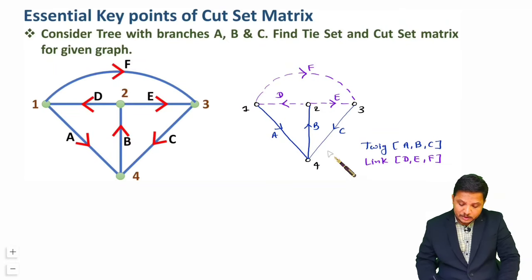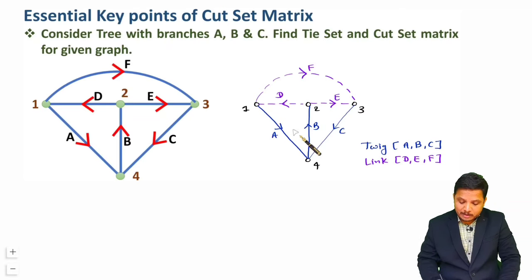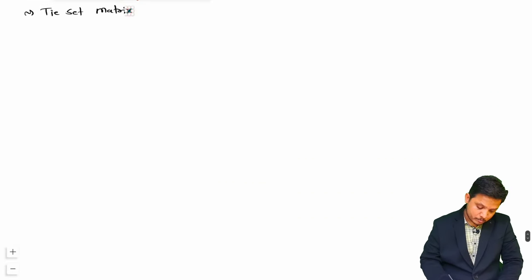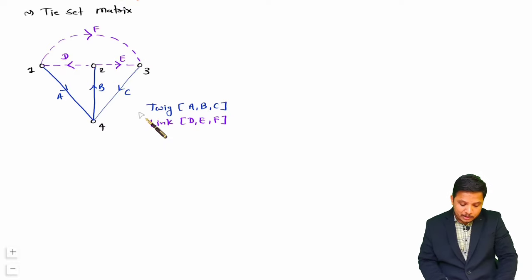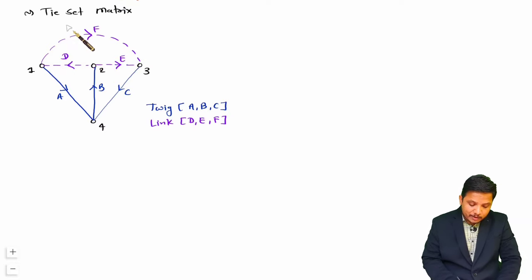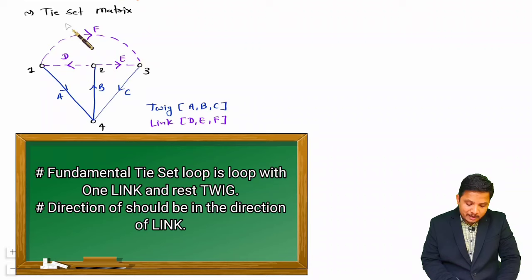The branches which are not connected with this tree are called links, and as per the standard process I should draw them with dashed lines. For this graph, the lines not connected in the tree are links, and here D, E, F are the links of this graph. Once you have this tree diagram we can form the tie set matrix and cut set matrix.